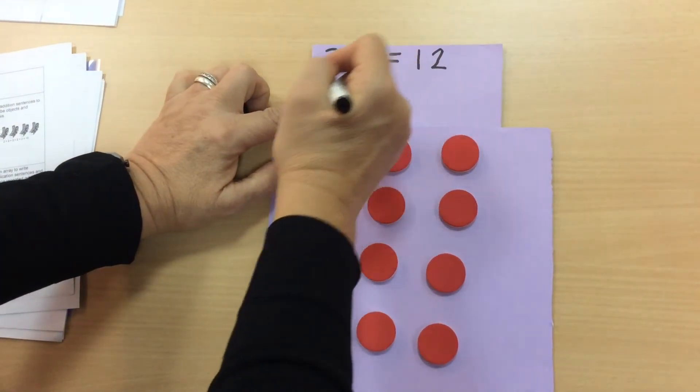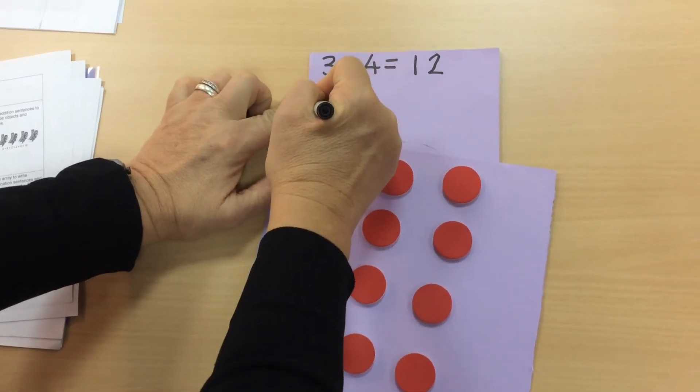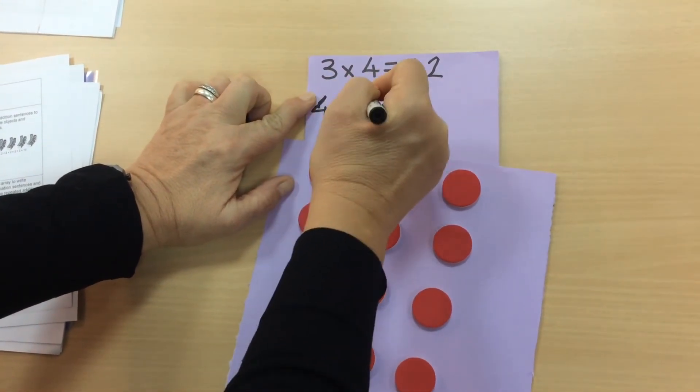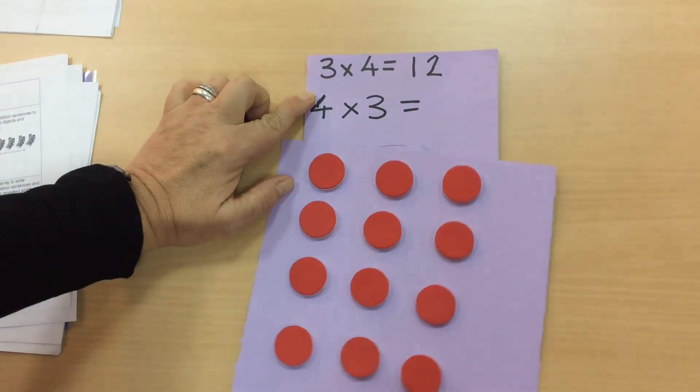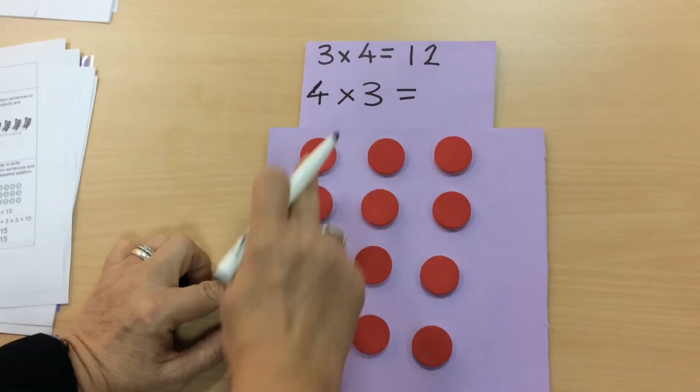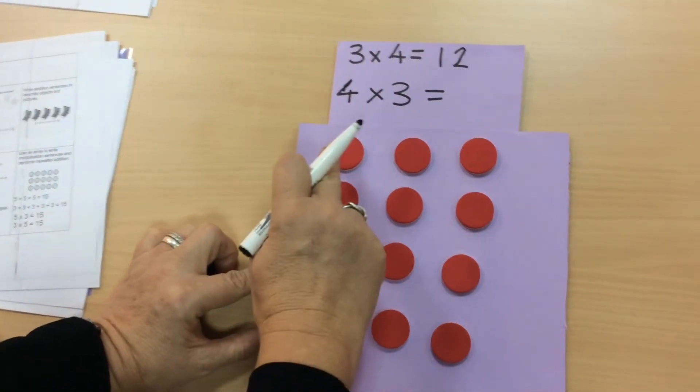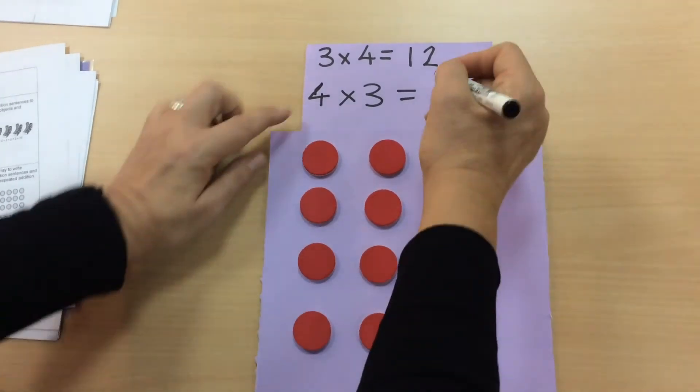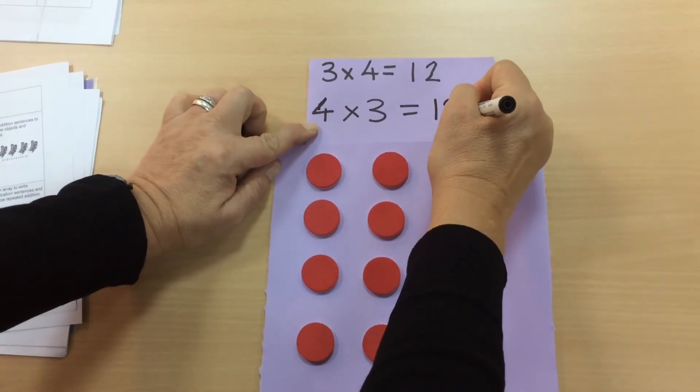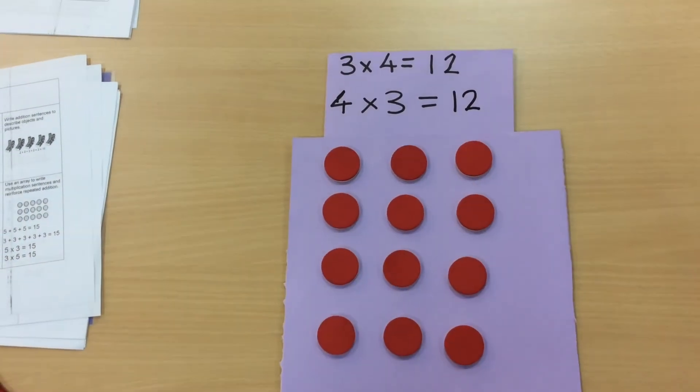We can have four lots of three, so instead of three lots of four, we've actually got four lots of three. Children will begin to realize that it's the same no matter which way you do multiplication.